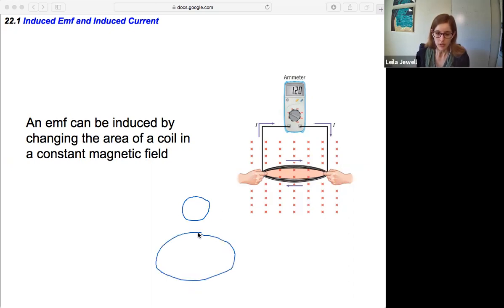If we make the coil larger, if we change the area of the coil that's within this magnetic field—which is shown with the x's here—that will also cause a current to pass through the loop, and the ammeter will detect that there's some current here.